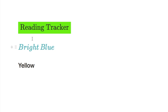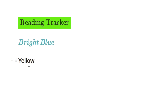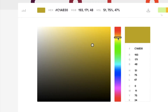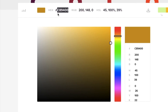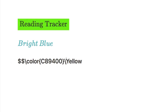For the final example, I want to show you how to incorporate both — a background colour and a custom text colour at the same time. First, go back to the colour picker and pick the text colour. I want a darker colour for the text so the lighter background contrasts well — something like a dark orange. Copy that hex code. Back in Notion, type two dollar signs, a backslash, the word 'color', then an open and close curly bracket with the text colour hex code inside.